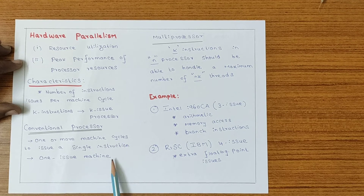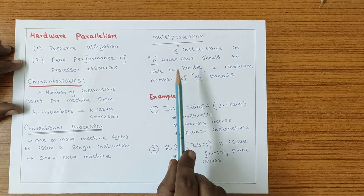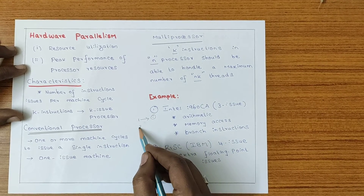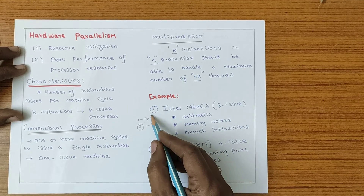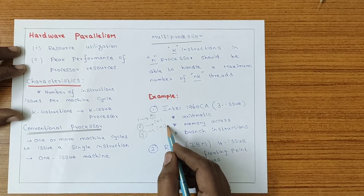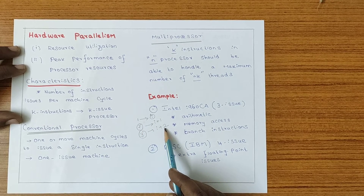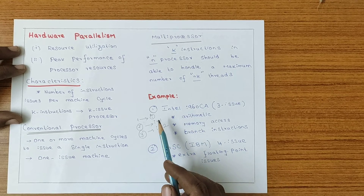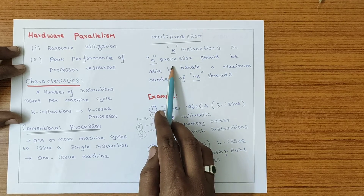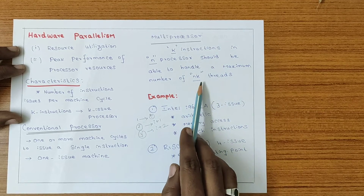In a multiprocessor system, K instructions are executed across N processors. The first processor handles one instruction, the second processor handles another instruction (I+1), the third processor handles I+2, and so on — three processors executing three different instructions simultaneously. This means we can execute N×K instructions in total, where K is the total number of instructions and N is the total number of processors, requiring N×K threads.